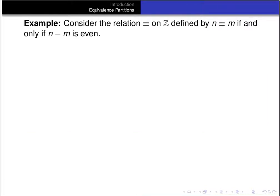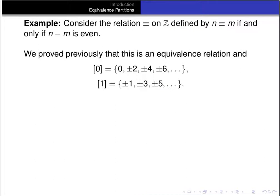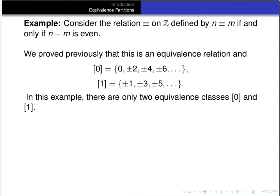To see this with an example, consider a relation on the integers defined as: n is equivalent to m if and only if n minus m is even. We proved previously that this is an equivalence relation. We also proved that the equivalence class of 0 is all the even numbers, and the equivalence class of 1 is all the odd numbers.